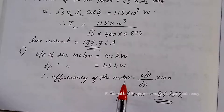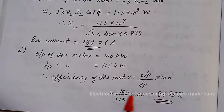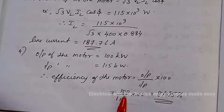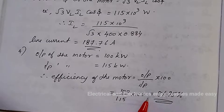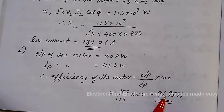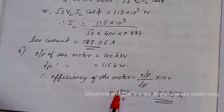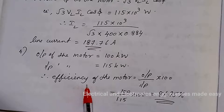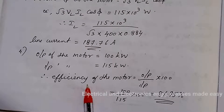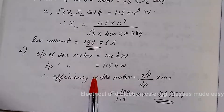The output of the motor is 100 kilowatt and the input is 115 kilowatt. Therefore the efficiency = (output / input) × 100 = (100 / 115) × 100 = 86.95%. Thank you for watching the class. If you like the classes, please like, share with your friends, and subscribe for more classes.